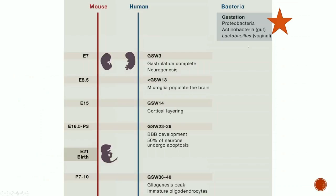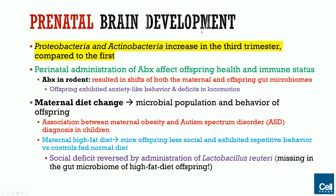The host bacteria changes over time. Primarily during gestation it is Lactobacillus in the vaginal and Acinetobacter in the gut. Some studies have shown that the fetus is not fully sterile and there is some interaction with the maternal gut microbiome. Acinetobacter and Proteobacteria increase in the third trimester compared to the first, and this may play a role in fetal development. Prenatal administration of antibiotics affects the status of both the mother and offspring — rodents given antibiotics showed anxiety-like behavior and deficits in locomotion.